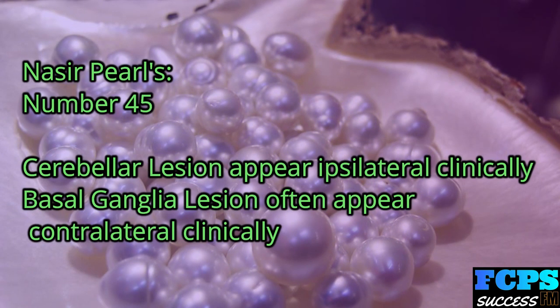Nasir Pearl number 45: Cerebellar lesions appear ipsilateral clinically. Basal ganglia lesions often appear contralateral clinically.